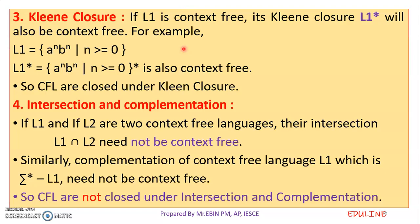The third property is Kleene closure. When we apply Kleene closure to a context-free language L1, it means we repeat L1 zero or more times. Context-free languages are closed under Kleene closure.